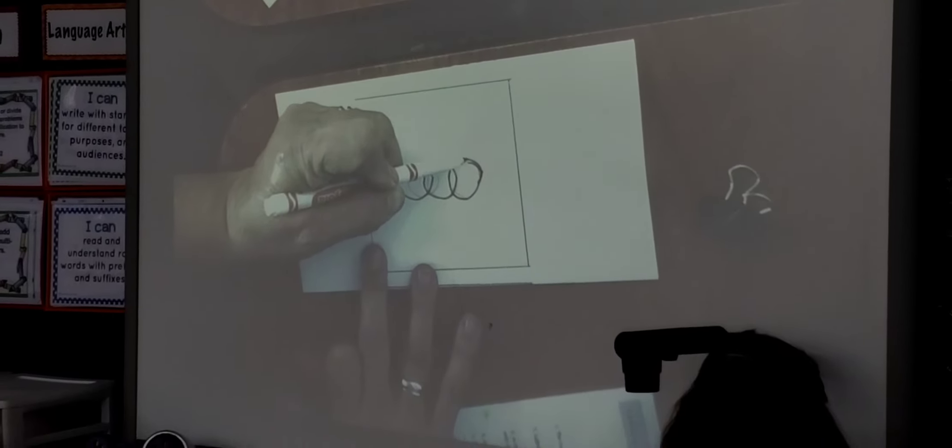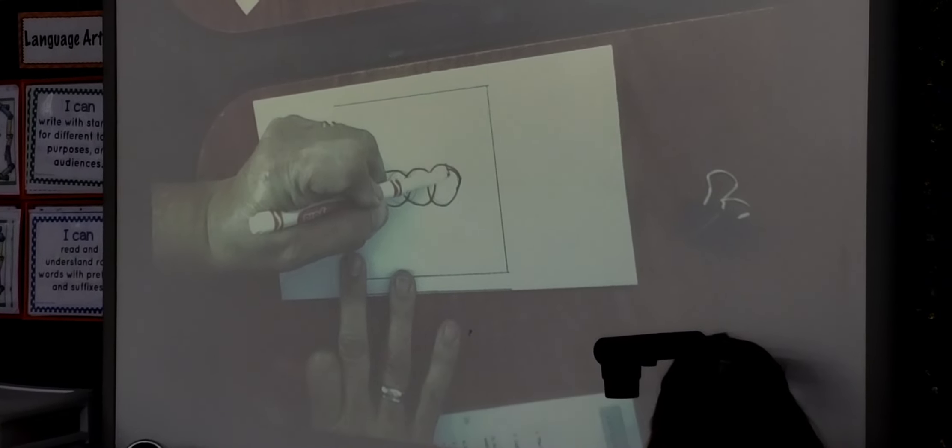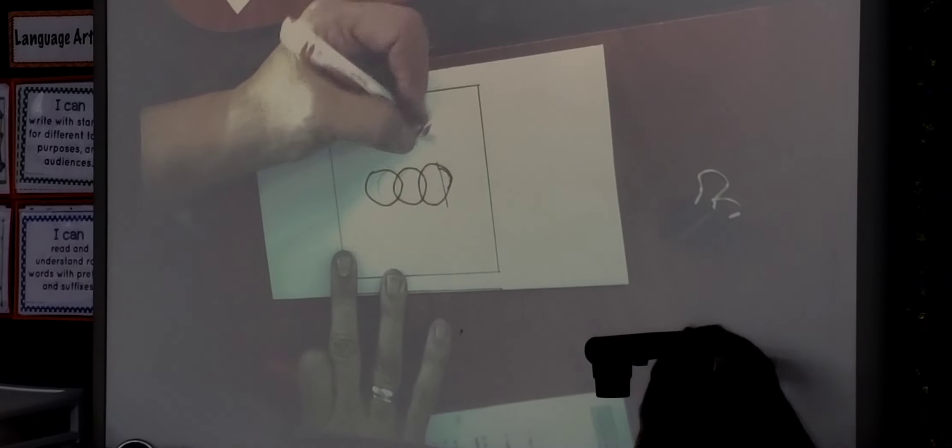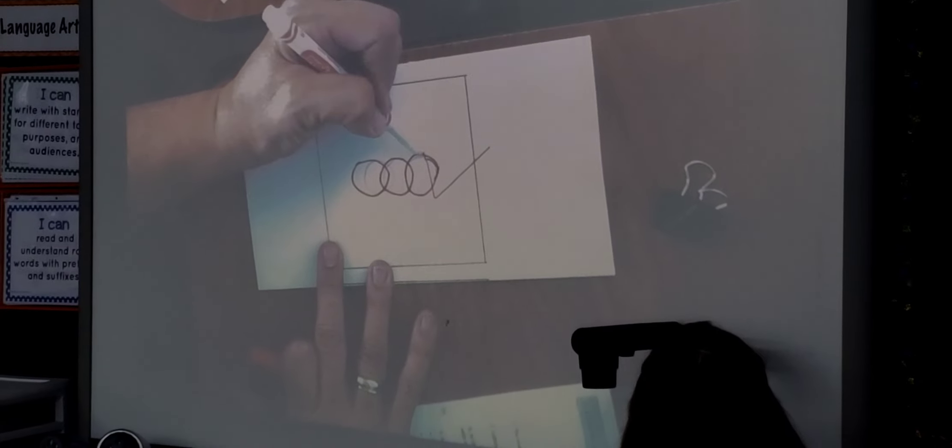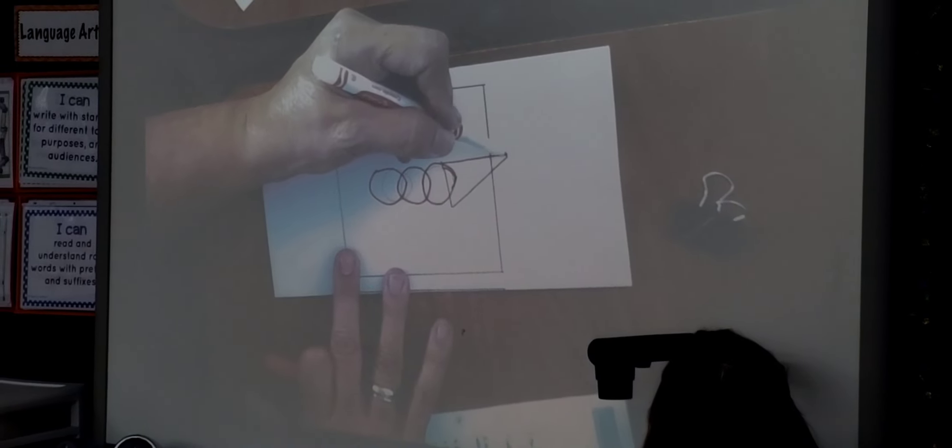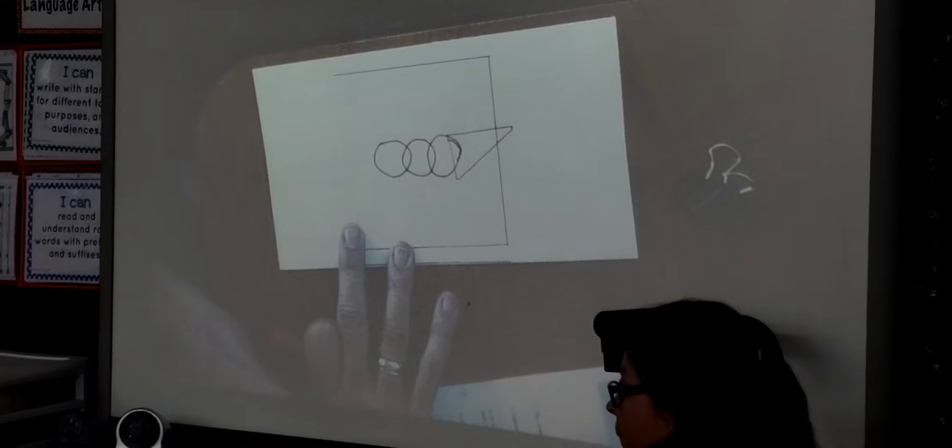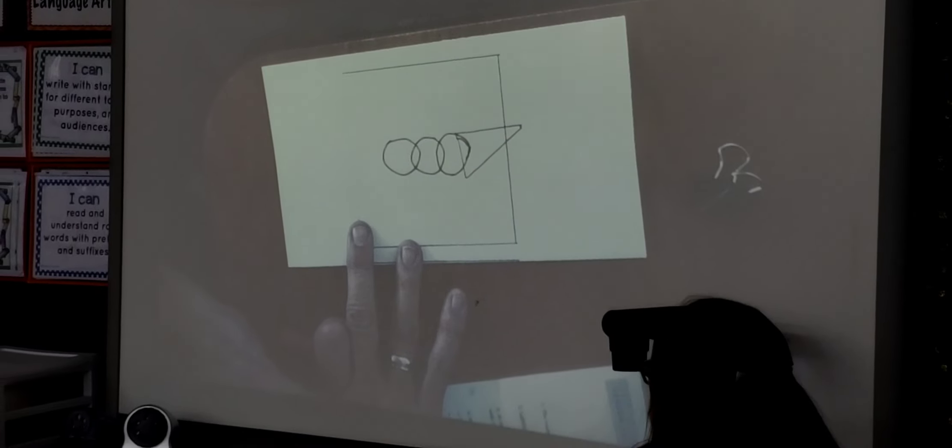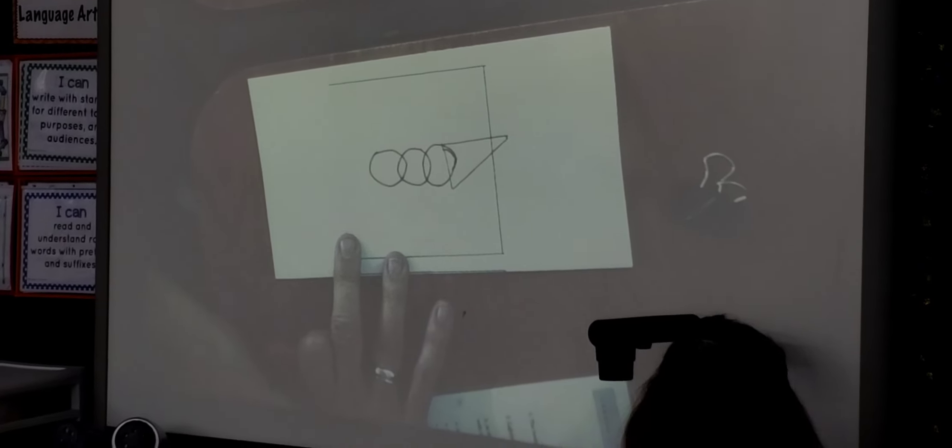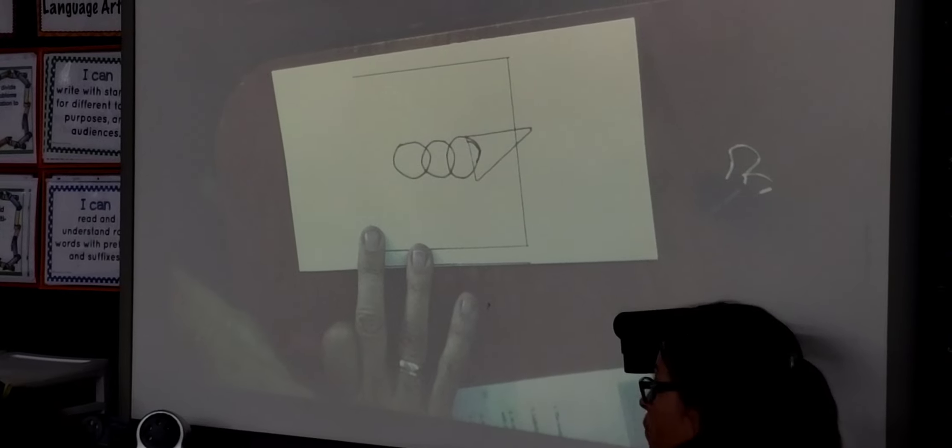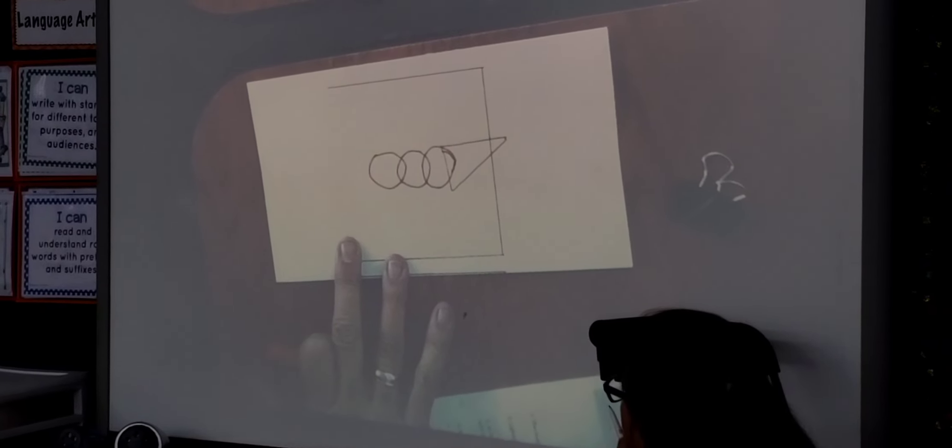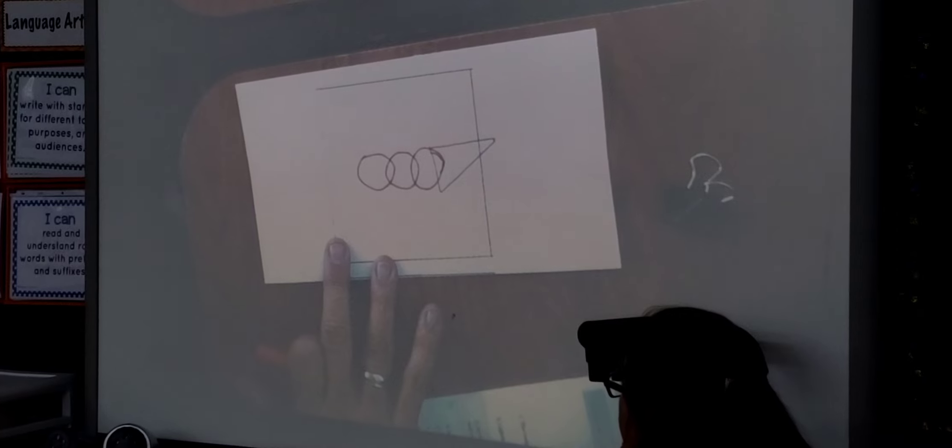And you're going to take and make a long triangle and that's going to go a little bit outside this or outside the square. Does the triangle have to be perfect? No, it's not a perfect triangle.